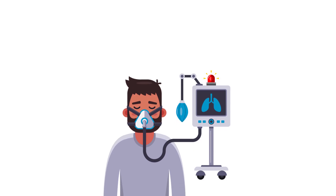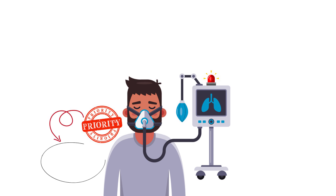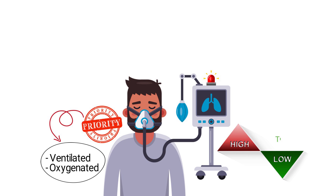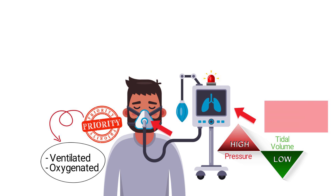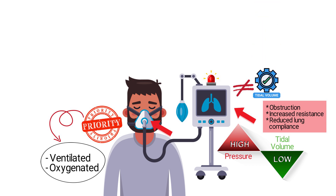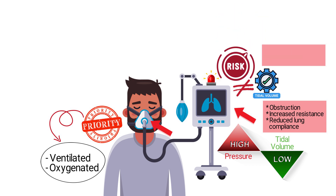When faced with ventilator alarms, your first priority is to ensure that the patient is being adequately ventilated and oxygenated. Alarms indicating low tidal volume and high pressure suggest a problem with the ventilator circuit or the patient's airway, such as an obstruction, increased resistance, or reduced lung compliance. If the ventilator cannot deliver the set tidal volume, the patient is at risk of hypoventilation and hypoxemia.